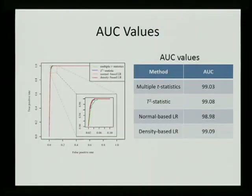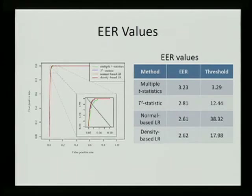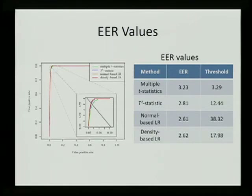Looking at the area under the curve values — multiplied by 100 to convert to percentages — they range from 98.98 to 99.09, which are very high. In medicine, an AUC of 88 would be considered quite good, so these are encouraging numbers. The equal error rate values range from 2.61% to 3.23%, and you can note the different thresholds that would lead to those error rates for each method.